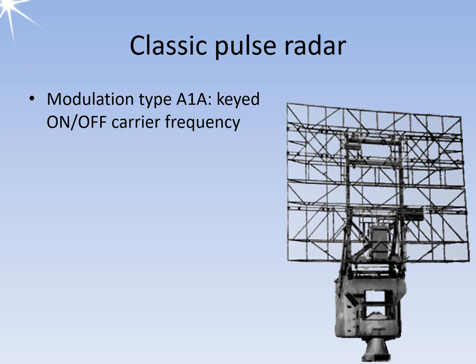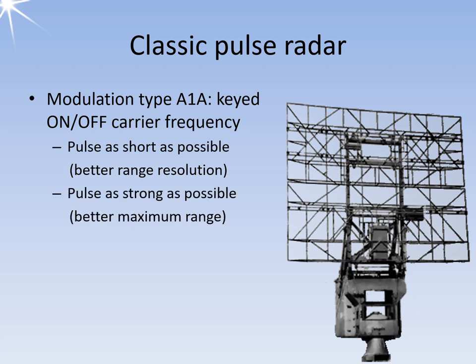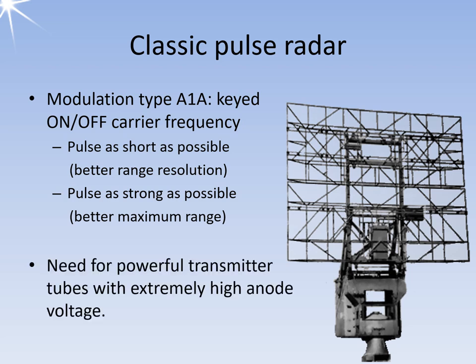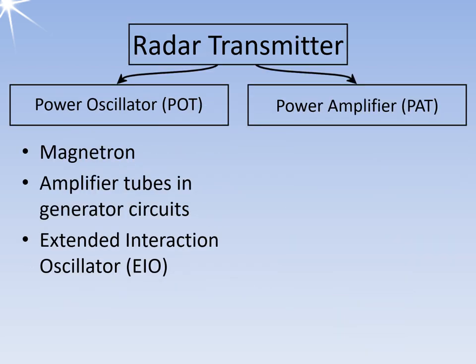In simple terms, the keyed on-off modulator switches the anode voltage of the tube on and off. The pulse should be as short as possible because the pulse duration influences the range resolution. However, the impulse should be as strong as possible because the impulse power influences the maximum range. This results in the need for powerful transmitter tubes with a very high anode voltage. Radar transmitters are divided into high power generators and high power amplifiers. The first radar transmitters used vacuum tubes as self-oscillating high power generators.